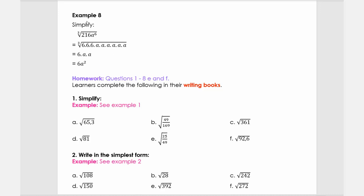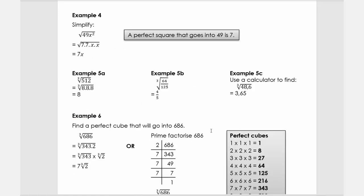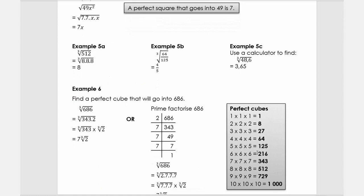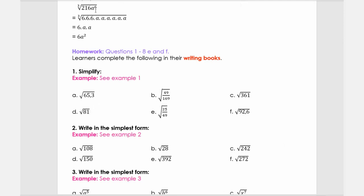Our last example: we're going to simplify the cube root of 216a to the power of 6. Through prime factorization we can see that 6 times 6 times 6 equals 216. Try and test until you get that, or go back to your list of perfect cubes. Then a to the power of 6 written out gives us 6 times a times a, so we get 6a squared.